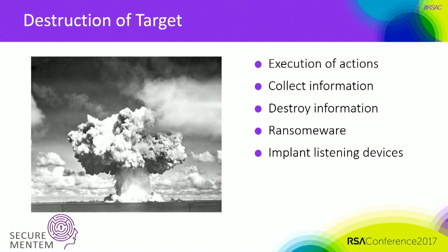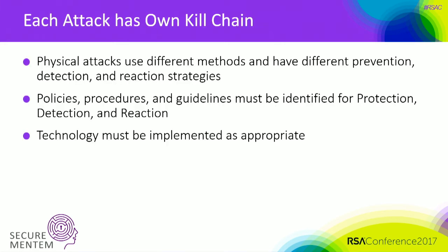After somebody has entered and executed one of the attacks, they try to execute the actions: collection of data, destroying data. Ransomware is a major concern — they somehow get the user to install ransomware one way or another. You can also implant listening devices with physical entry. Each attack has its own kill chain with different points where you can stop it — a phishing attack has different stopping points than a USB drop, where you take a USB drive with malicious software and hope some user plugs it in.